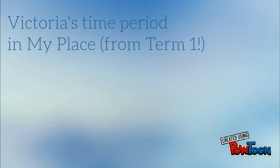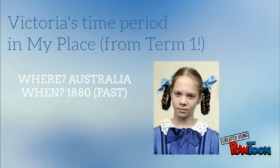Victoria's time period in My Place from Term 1. Where: Australia. When: 1880.